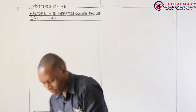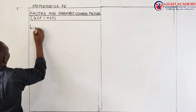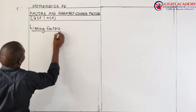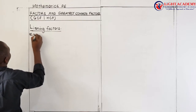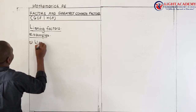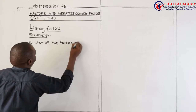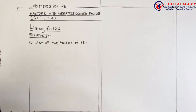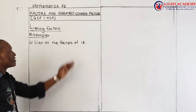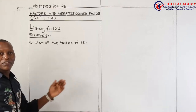So let me start from the point of listing the factors. We can talk about listing factors. There are some common questions here. For example, the first one says: list all the factors of 18. We are listing the factors of 18. What does this question mean? It is telling us to get those numbers that can exactly divide 18 — pick out the numbers which can divide 18 without giving a remainder.